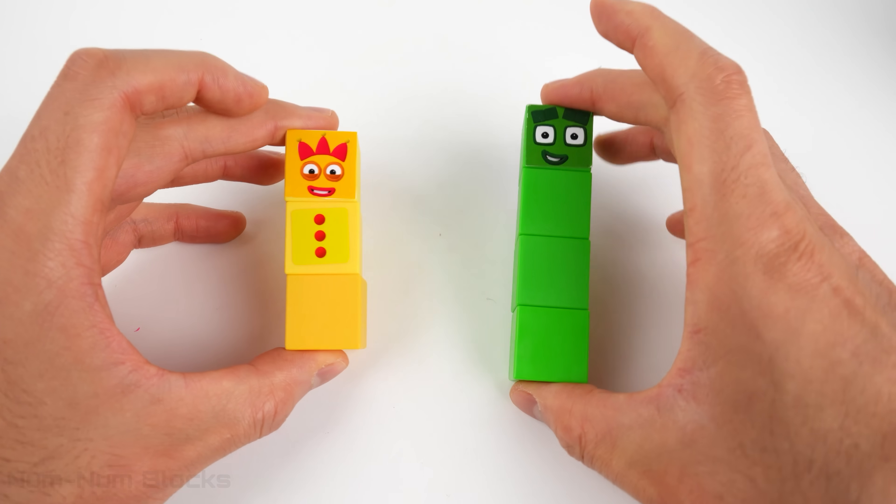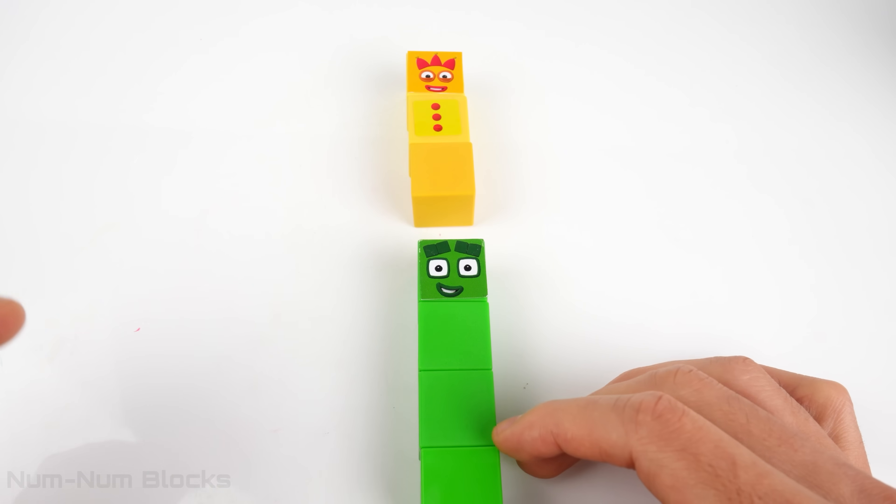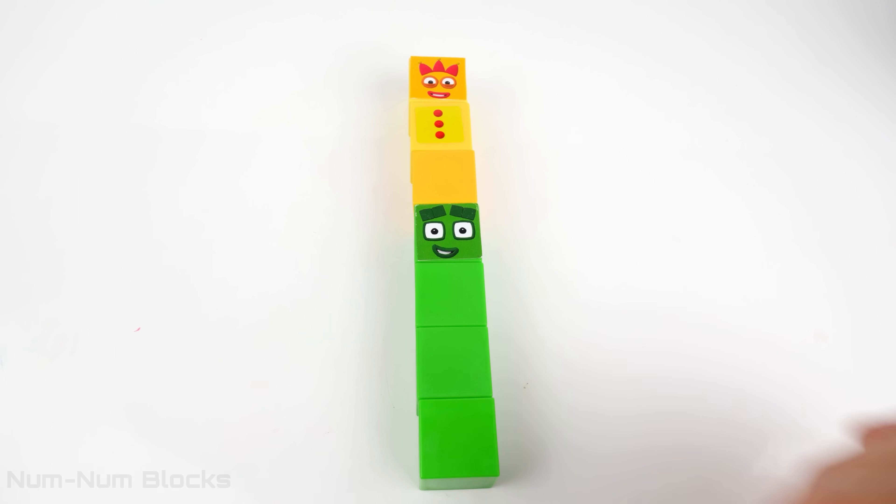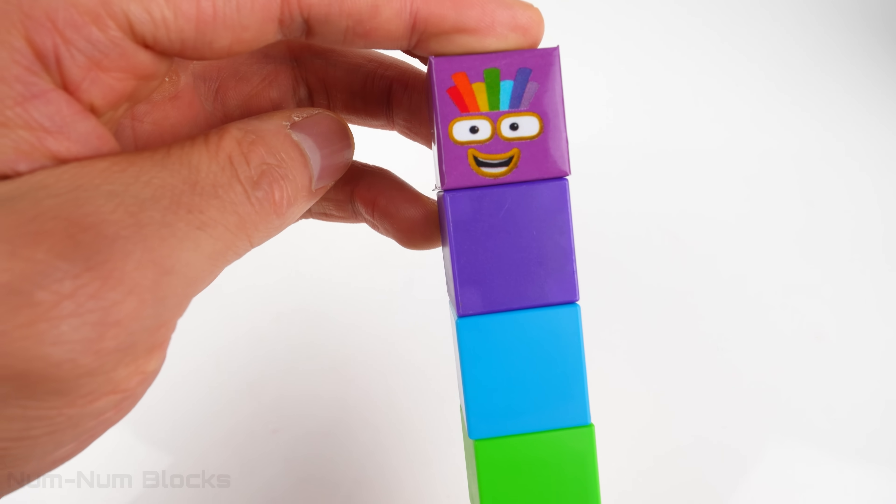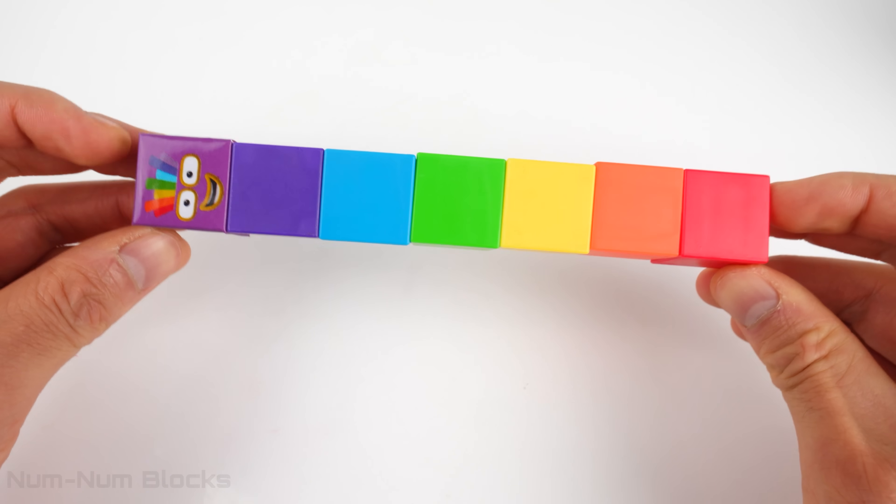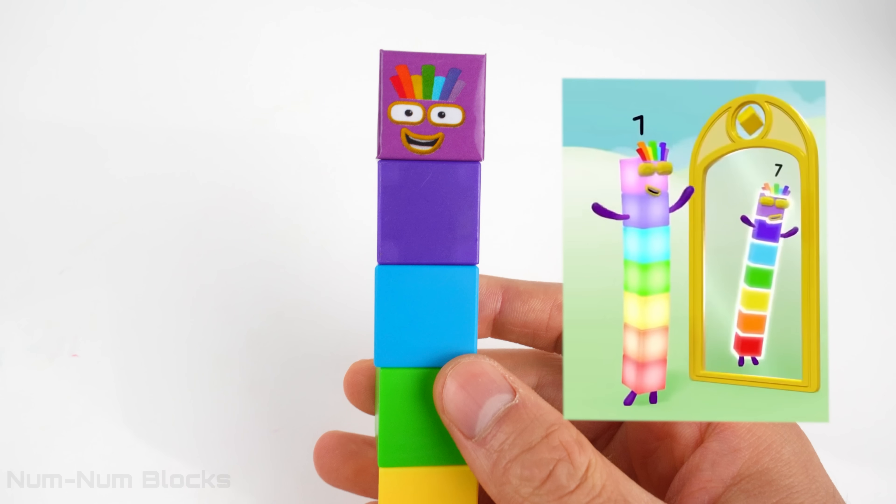Now let's add three and four together. Hi, seven. Hip hip hooray! Seven's here today. He looks like a rainbow. Seven!